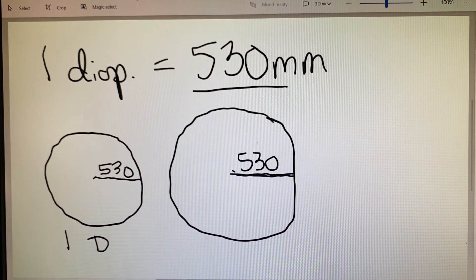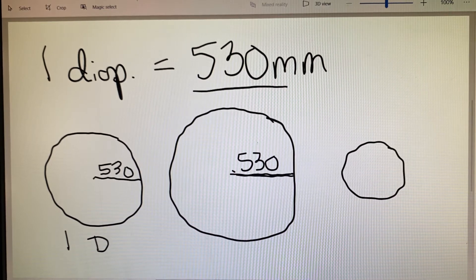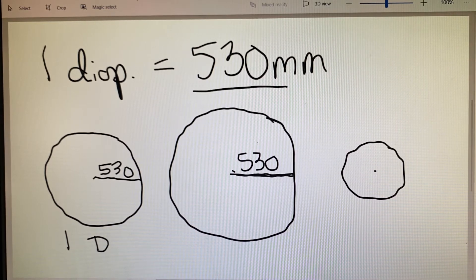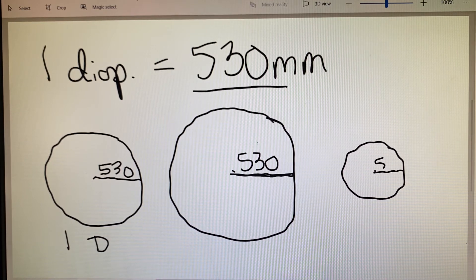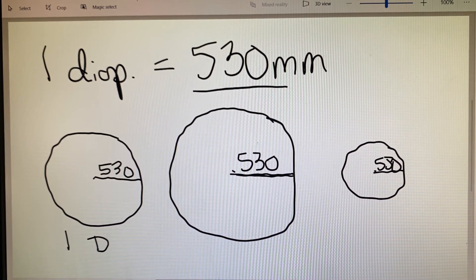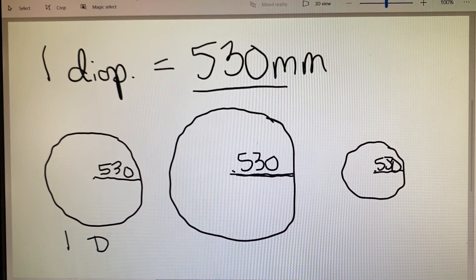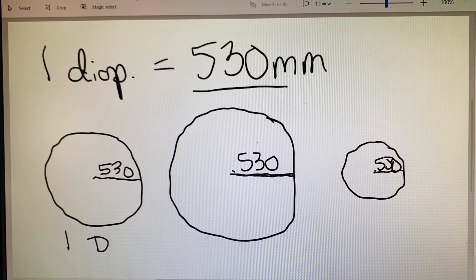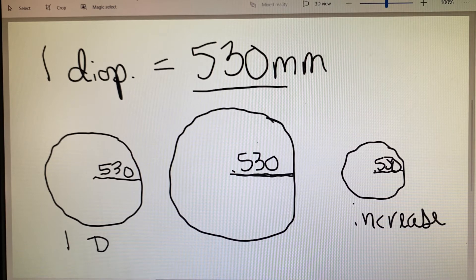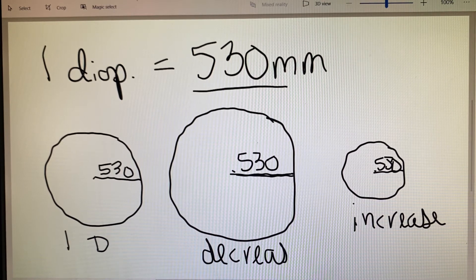If we were using a smaller lens blank to start with, and again, measure that radius of curvature at 530, but that distance had decreased, it would actually create more power. So an increase in power as the size of the blank decreases. So a decrease in power for our larger lens and an increase in power for our smaller lens.